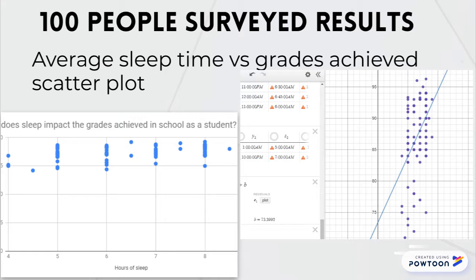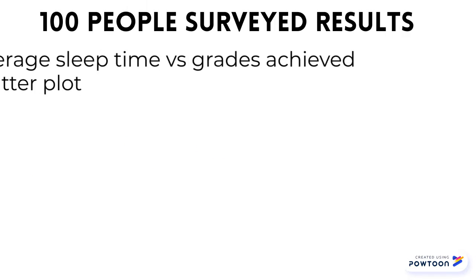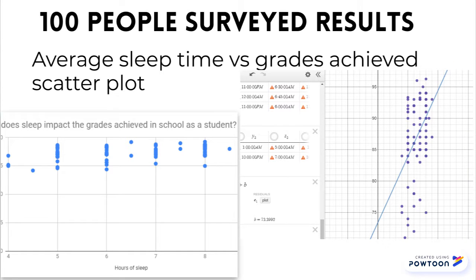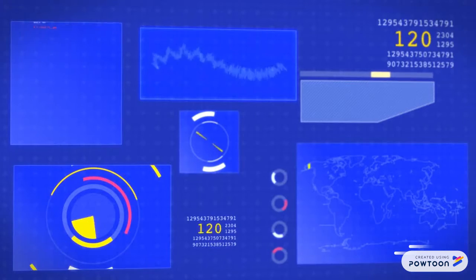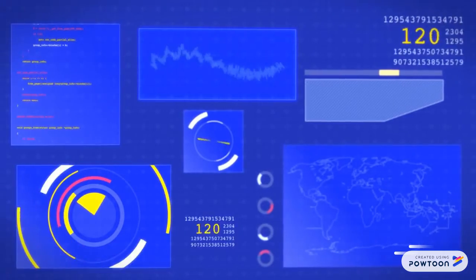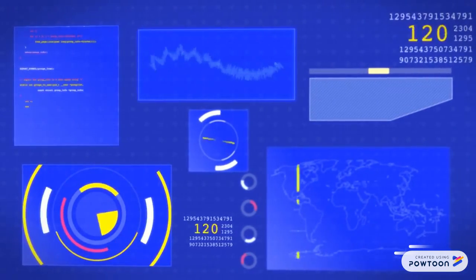Now for the most important data set, the scatter plot compares the correlation between the grades achieved and the amount of sleep. Using the data indicated, there seems to be more people that get a whole range of grades within specific intervals of sleeping time. There are a whole range of grades in 5, 6, 7, or 8 hours of sleep. The line of best fit has an equation of y equals 2.1031x plus 73.3992, which yields an R value or correlation value of 0.4142, which is somewhat okay.